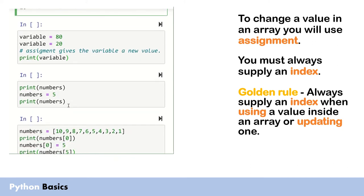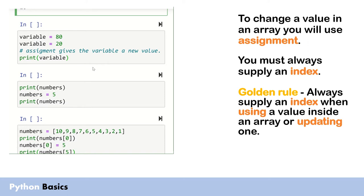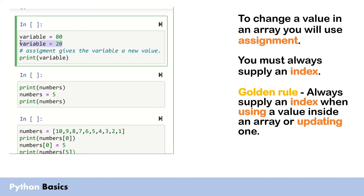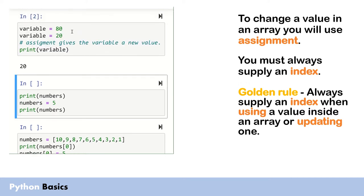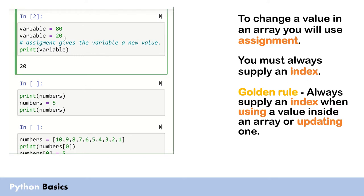When we think about updating a value inside an array we've got to remember how we change values in a variable. Here I'm setting a variable called variable with the value of 80, and then immediately changing the value to 20. When I run this code it prints out 20, because first it has a value of 80, then the next line it's changed to 20, and then the print happens after the change has occurred. Remember this equal sign in Python is known as assignment - it takes whatever's on the right-hand side and stores it in the variable on the left.